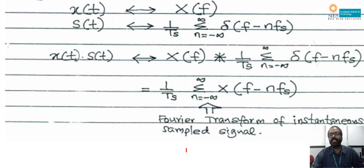Here n varies from minus infinity to plus infinity. When n = 0, we get X(f). When n = 1, we get X(f − fs), which is the right-shifted spectrum. When n = −1, we get X(f + fs), which is the left-shifted version. In this way we obtain the complete spectrum of the sampled signal.